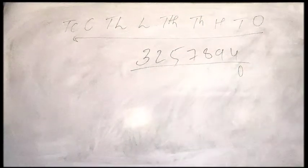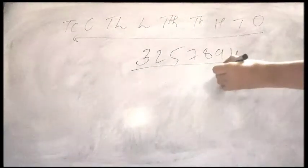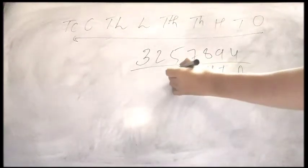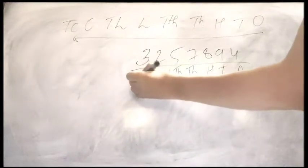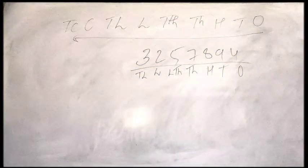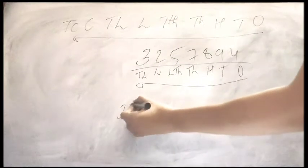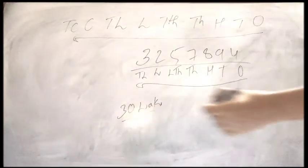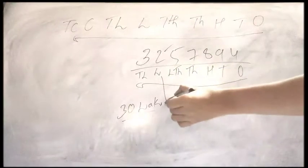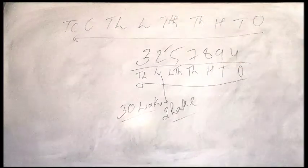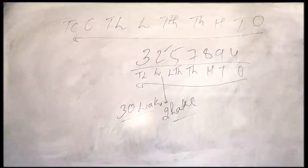So 4 is at ones, 9 is at tens, then hundreds, then thousands, then ten thousands, then lakhs, then ten lakhs. So basically numbers can be expanded with the help of the Indian number system. This ten lakhs means 30 lakhs, and this 2 lakhs means 2 lakhs. Here I am writing in the word form, so this way you can read the number, write it, and also expand it.